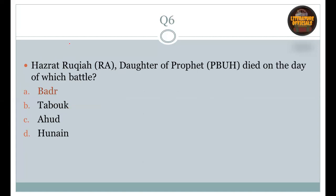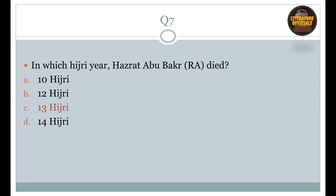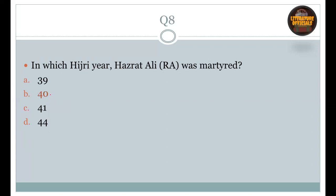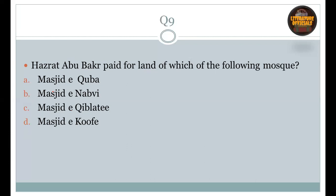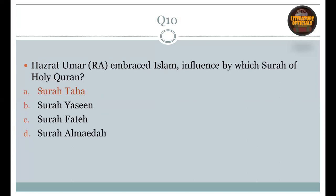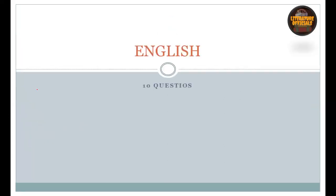Question number 6: Hazrat Ruqayya, the daughter of the Prophet peace be upon him, died on the day of which battle? That is A, Ghazwa-e-Badr. Question number 7: In which Hijri year did Hazrat Abu Bakr die? That is 13th Hijri. Question number 8: In which Hijri year did Hazrat Ali embrace martyrdom? That is B, 40 Hijri. Question number 9: Hazrat Abu Bakr paid for the land of which mosque? That is Masjid-e-Nabvi. Question number 10: Hazrat Umar embraced Islam influenced by which Surah of the Holy Quran? The right option is A, Surah Taha.